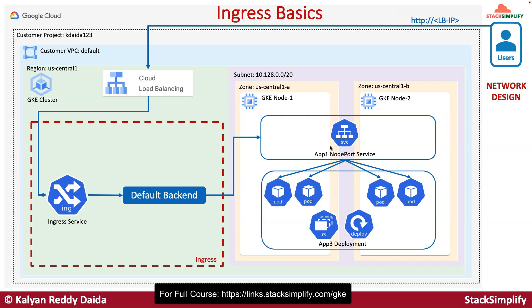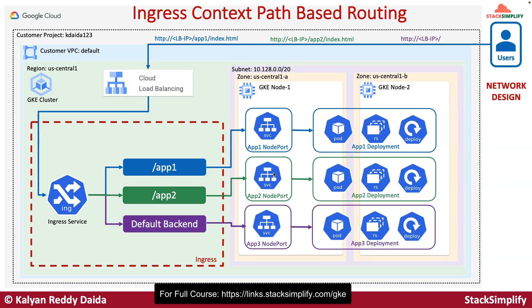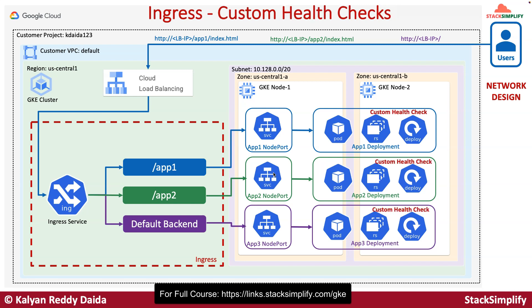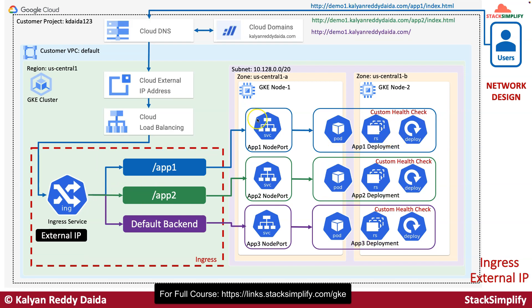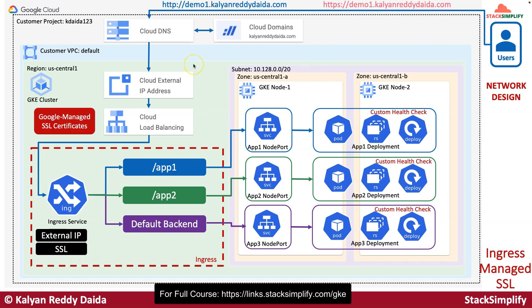In these 17 ingress demos, we are going to understand ingress basics with a basic ingress demo, then implement ingress context path-based routing, ingress custom health check demo, and the ingress external IP demo. We will also use ingress with Google-managed SSL certificates and cloud DNS in combination to implement a managed SSL demo — using cloud domains, cloud DNS, cloud external IP address together with Google-managed SSL certificates.